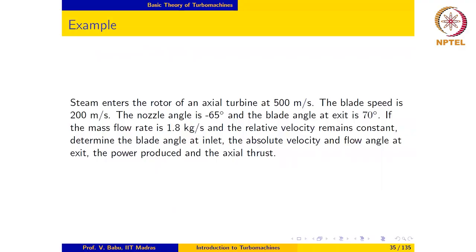Let us work out an example that requires us to construct a velocity triangle and calculate a few quantities of interest for an axial turbine. The problem statement reads as follows: steam enters the rotor of an axial turbine at 500 meters per second. The blade speed is 200 meters per second, and the nozzle angle is minus 65 degrees.